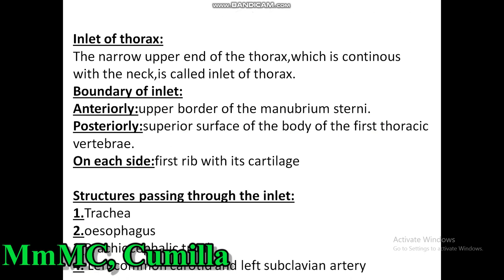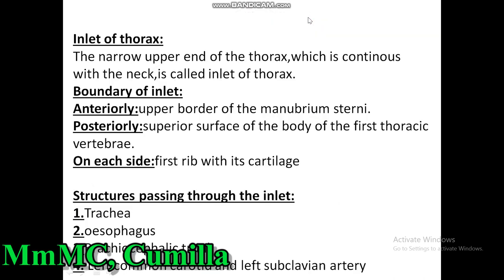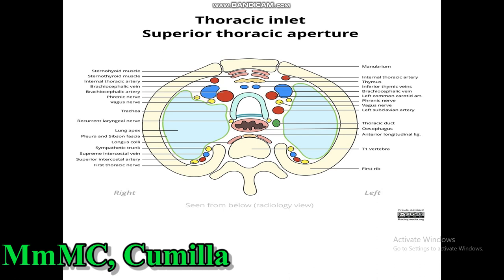The narrow upper end of the thorax, which is continuous with the neck, is called the inlet of the thorax. The boundary of the inlet is anteriorly the upper border of the sternum, posteriorly the superior surface of the body of the first thoracic vertebra, and on each side the first rib with its cartilage. Structures passing through the inlet include the trachea, esophagus, brachiocephalic trunk, left common carotid and left subclavian artery, right and left brachiocephalic vein, and right and left phrenic and vagus nerves. You have to draw the diagram of the thoracic inlet in your written exam.